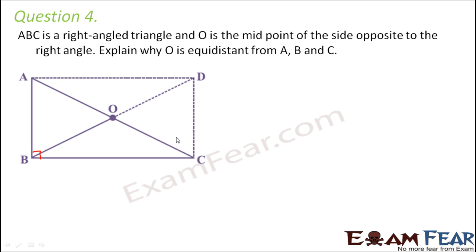Explain why O is equidistant from A, B, and C. Basically you have to prove that this distance is equal to this distance—that is, OA is equal to OB is equal to OC. So this is what you have to basically prove.